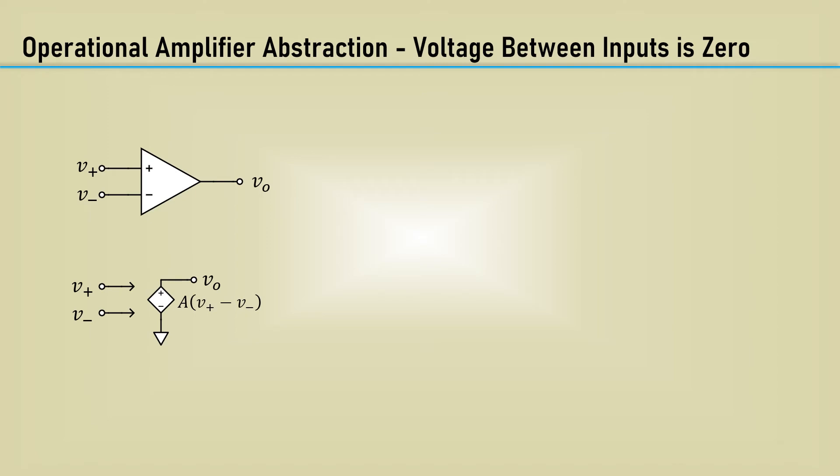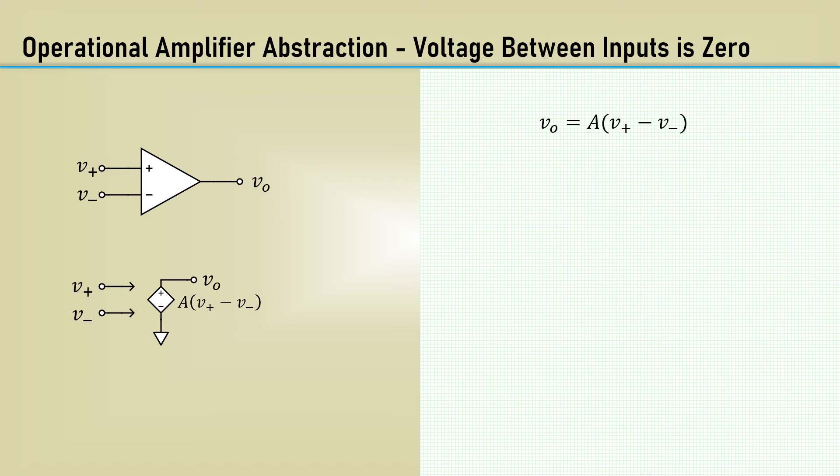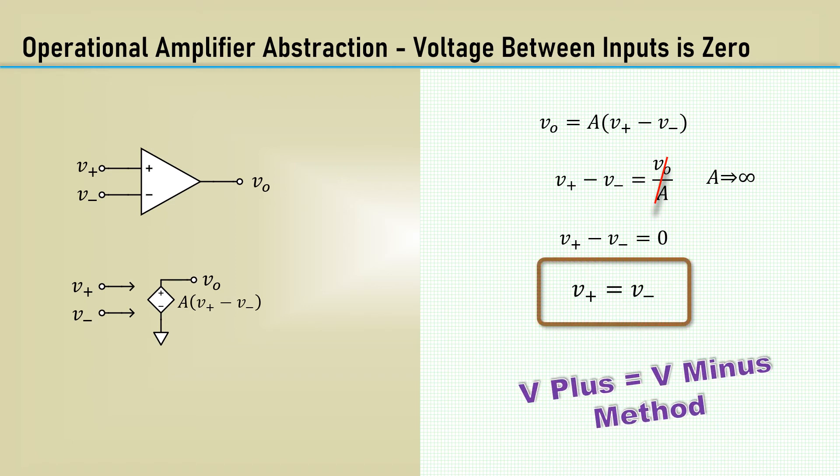Let's look at the abstraction that the voltage between inputs is zero. Our model says that the output voltage, V0, is the difference between the two input voltages times the gain, A. Rearranging that to solve for the difference in input voltages places the gain, A, as the divisor. We make the assumption that gain, A, is infinite, and this term goes to zero. This mathematically makes the difference between the two input voltages zero. Therefore, V plus equals V minus. This is often called the V plus equals V minus method for analyzing op-amp circuits. It's one of the key assumptions that makes this abstraction concept work so easy for us.